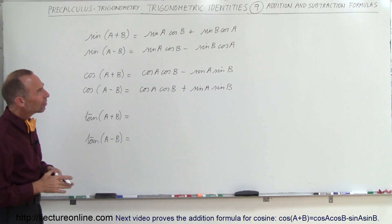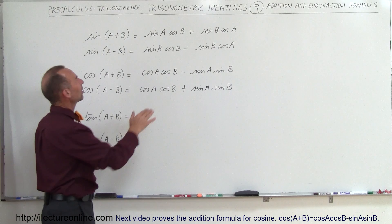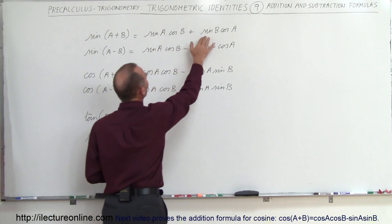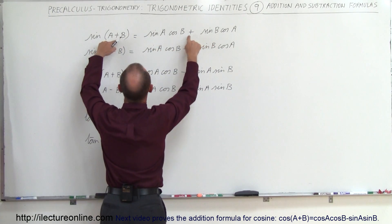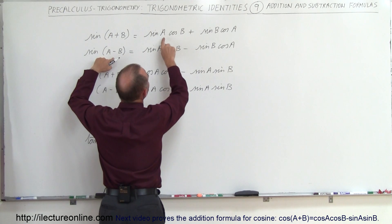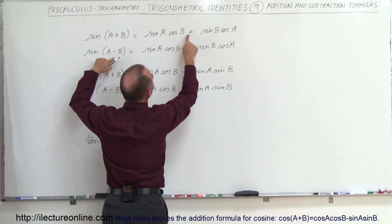All right, so when you look at that you see some patterns. Notice that it's sine and cosine, sine and cosine. The plus sign matches, the negative sign matches—simply the angles change. Here you have AB and there you have BA.